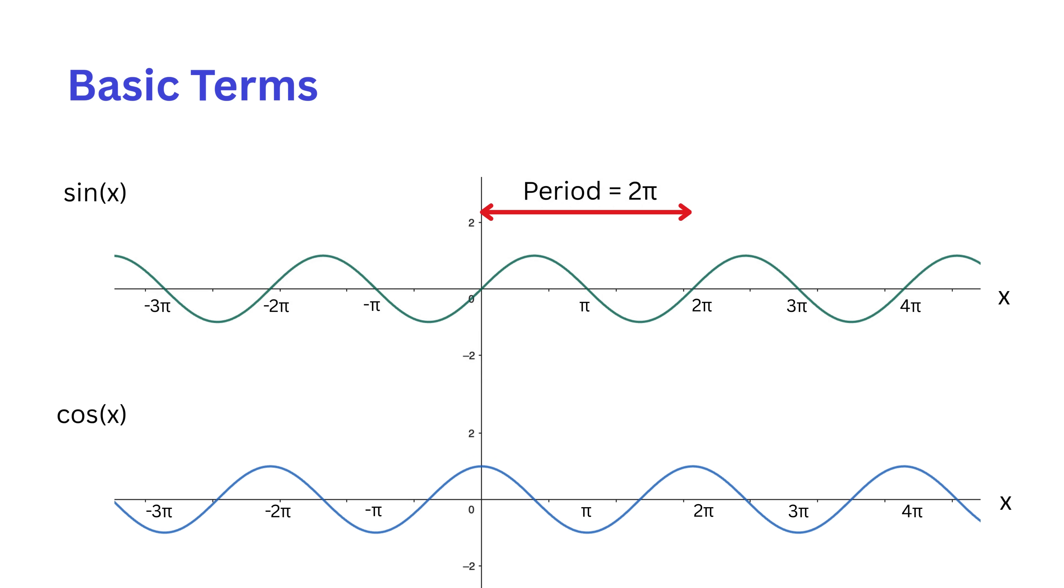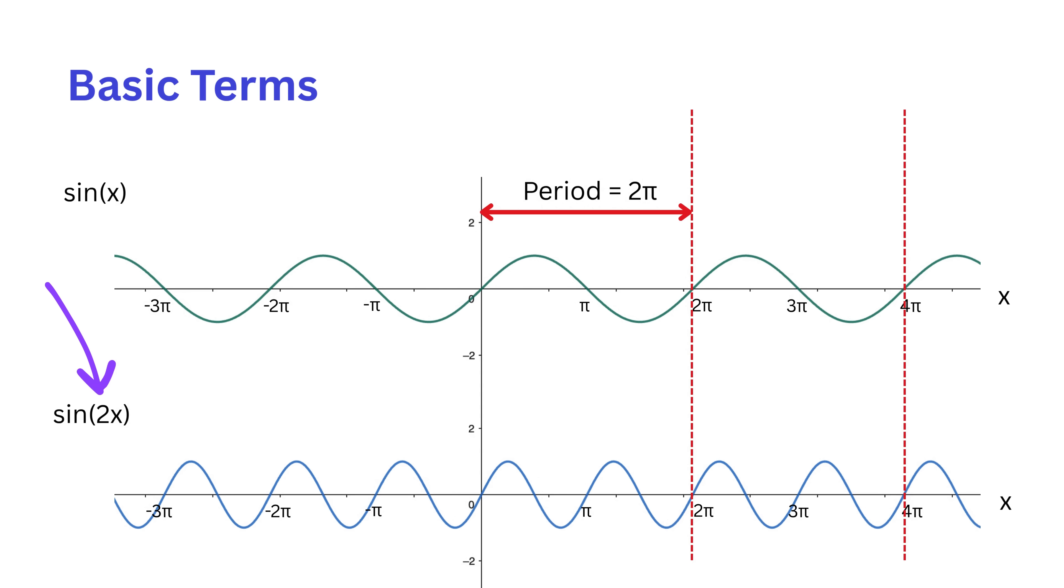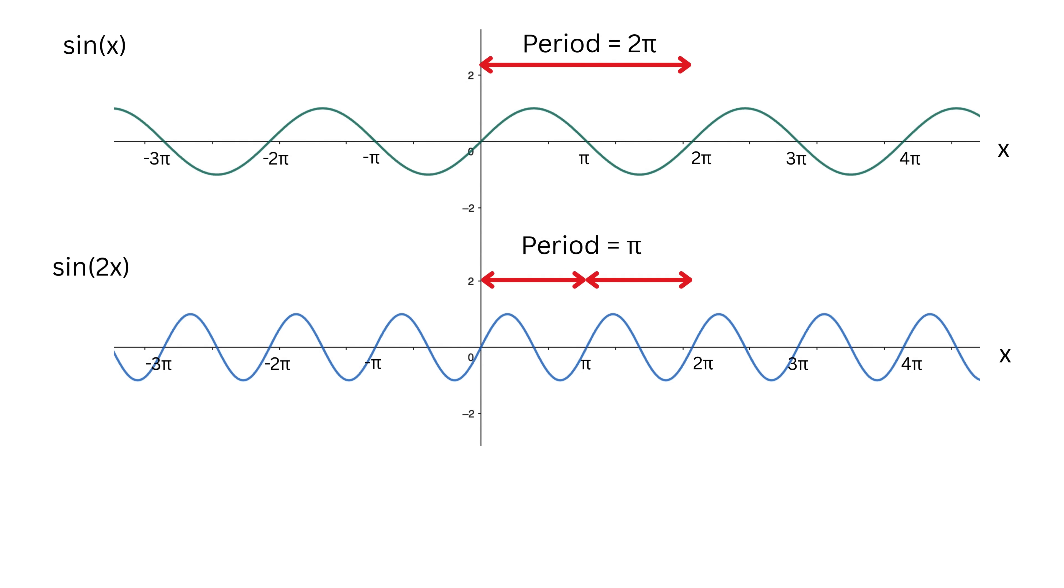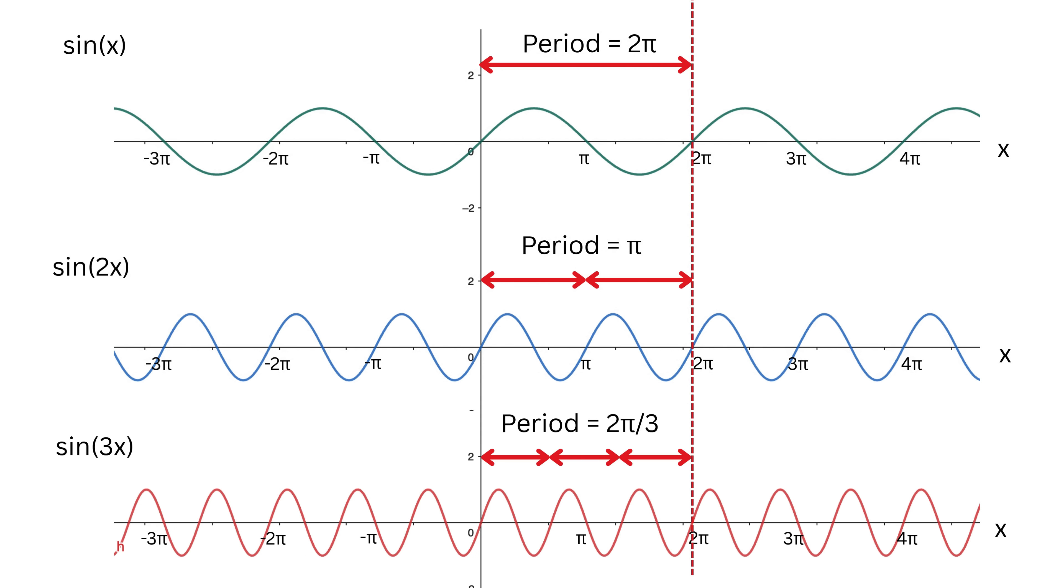Now let us take a slightly different wave, sin(2x). What happens here? The wave moves faster, because the number 2 in front of x makes it complete two full up-and-down cycles in the same space where sin(x) completed only one. So the period of sin(2x) is not 2π anymore. Instead, the wave finishes one full cycle in half the distance, so its period is π. In other words, sin(2x) repeats after π distance. Next, let us look at sin(3x). In this case, the wave moves even faster. Within 0 to 2π, it completes three full cycles. That means the length of one cycle is shorter. The period now is 2π divided by 3.